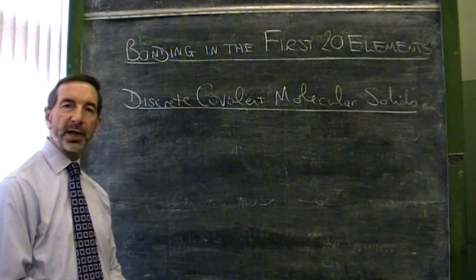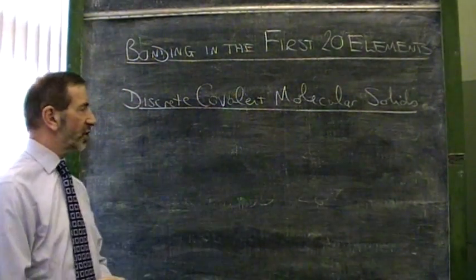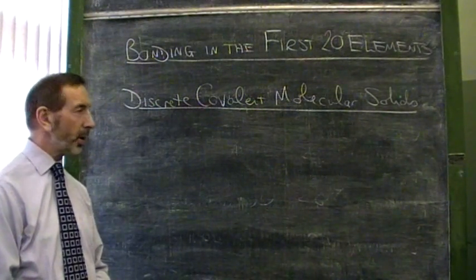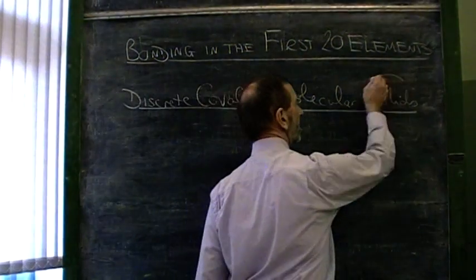We're still looking at the bonding in the first 20 elements, but now we've moved on to discrete covalent molecular solids, the keyword being solids.